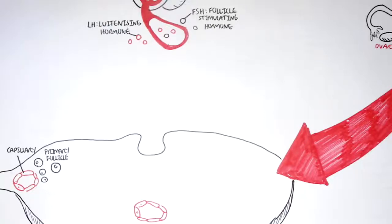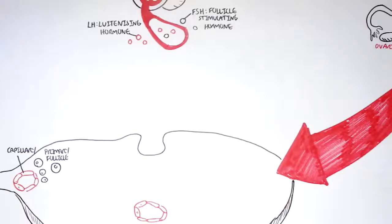Let's say it's the beginning of the menstrual cycle — just after a female has shed her uterine wall, just had the period. Within the ovaries, females have many, many primordial follicles, and each month only some of these will mature into primary follicles. They will keep maturing, but only one will ovulate. Here I'm drawing one primary follicle at the beginning of the menstrual cycle.